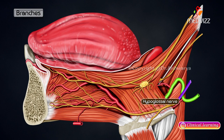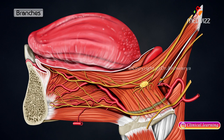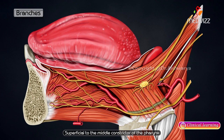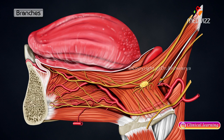The second part of the lingual artery lies deep to the hyoglossus along the upper border of the hyoid bone and is superficial to the middle constrictor of the pharynx. The third part, also called the arteria profunda linguae or deep lingual artery, runs upwards along the anterior border of the hyoglossus and then horizontally forwards on the under surface of the tongue.